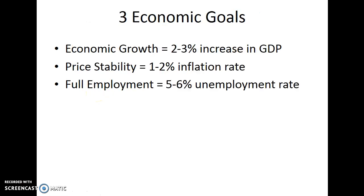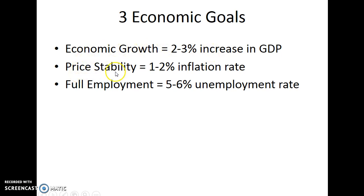When we talk about the economic goals, there are certain percentage changes we are trying to achieve. With real GDP, the economic goal is for economic growth, and we're looking for a slow and steady growth of about 2% to 3%. Price stability — that is inflation — and we're looking for a 1% to 2% inflation rate. Full employment is a goal of around 5% to 6% unemployment.